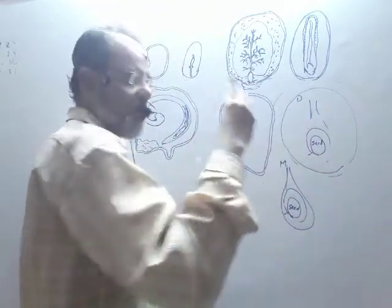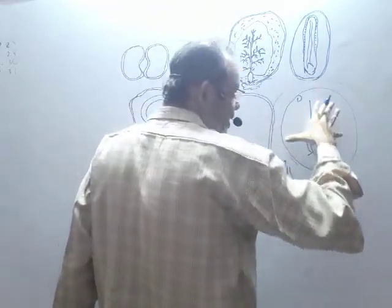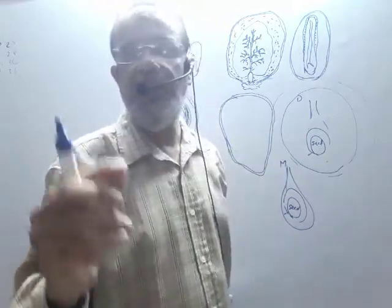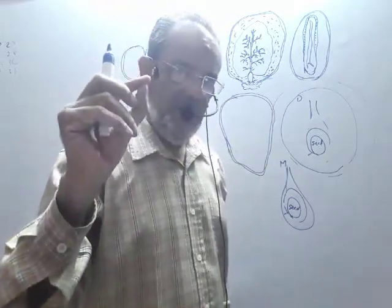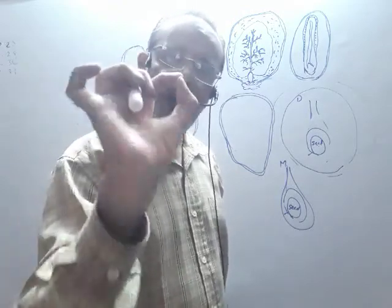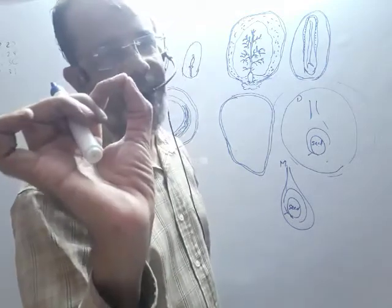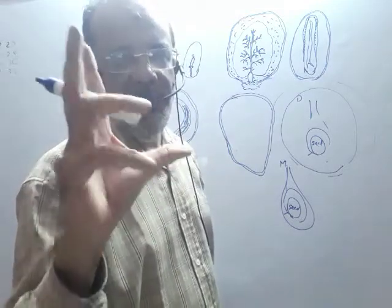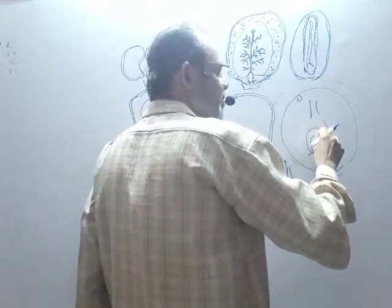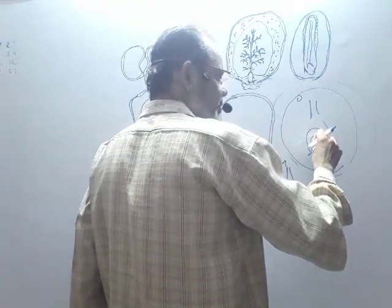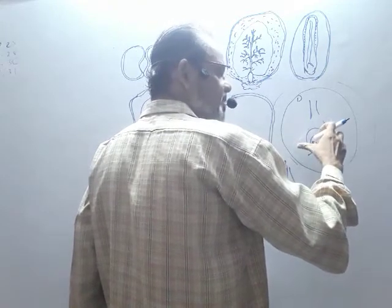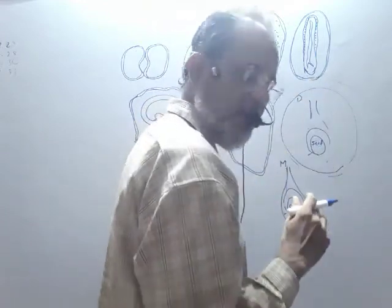The seed becomes bigger and the fruit becomes bigger. For instance, if you have seen the flower of mango — the flower of mango is very small, the ovule is also small. But the mango fruit is quite large, because after development of the embryo, the seed increases the size of the ovule and the surrounding parts.